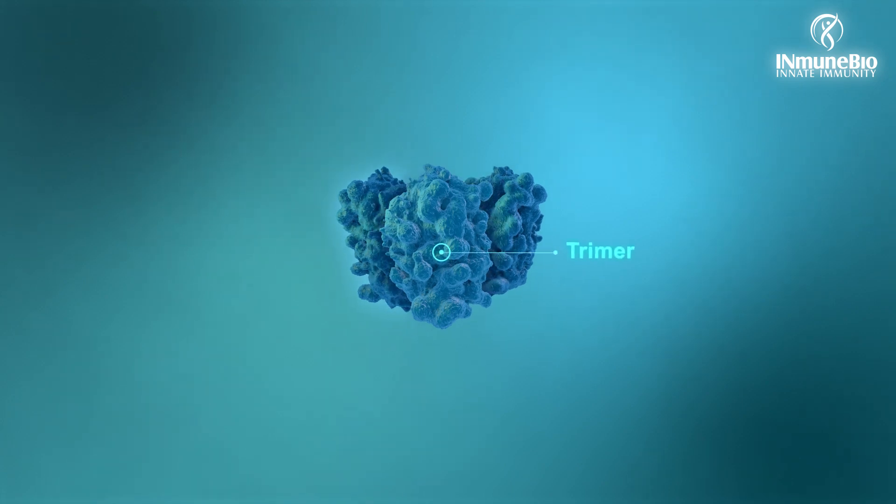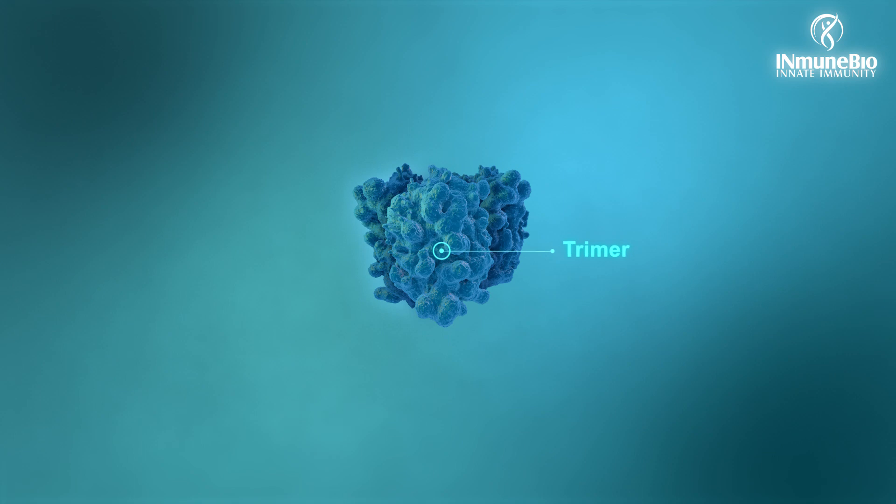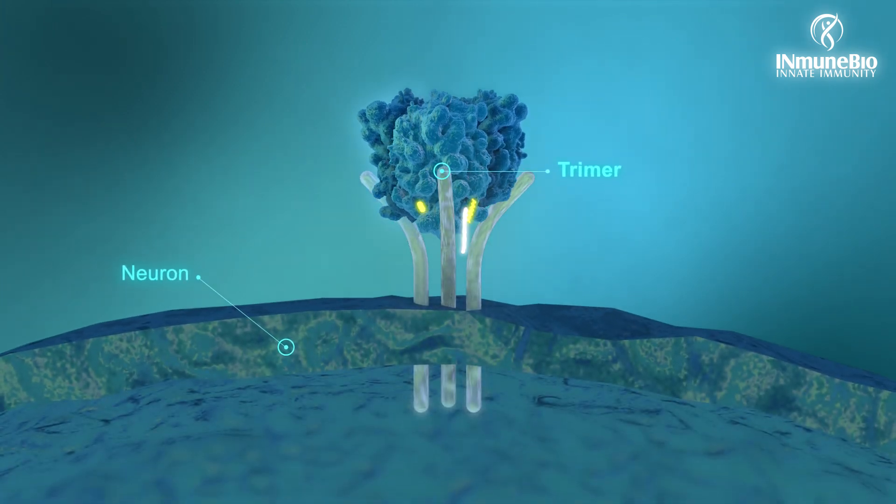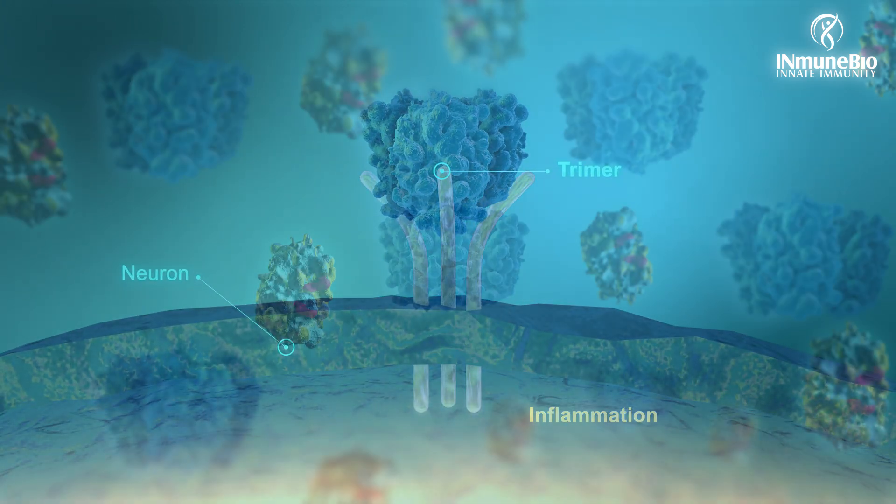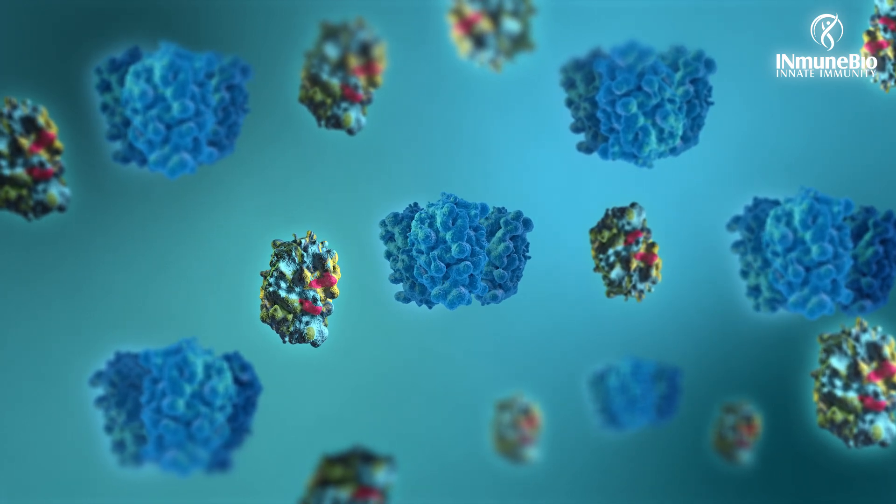The effects of bad TNF occur only when three identical soluble TNF proteins come together as a trimer and bind TNF receptors. DN-TNF mimics these TNF proteins.